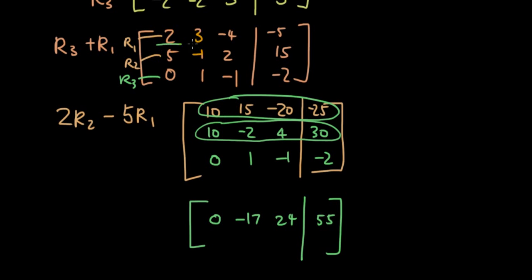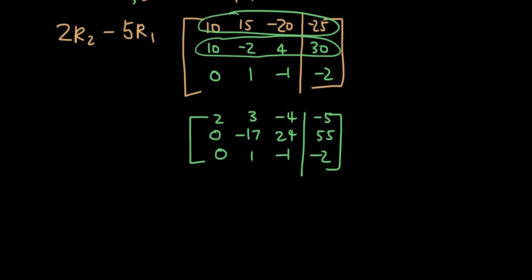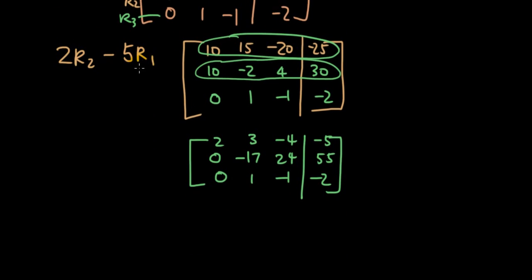So now I'm going to copy down row 1 as it was before, before I've made any changes to it, because I only make changes to one row at a time, so I have 0, 1, negative 1, negative 2. So this is the result from doing 2 times row 2 minus 5 times row 1. This is the result after step 2, and now we want this last number here to be 0.